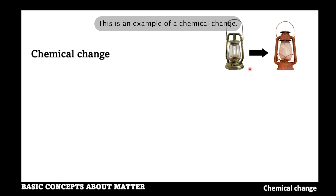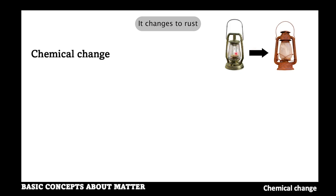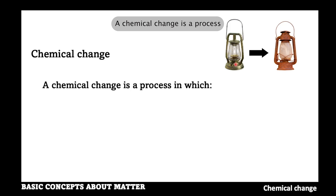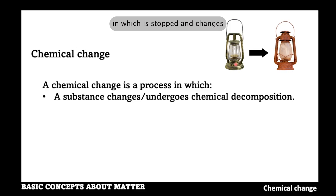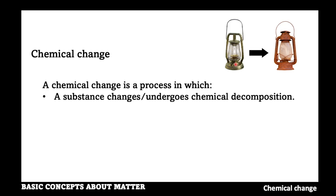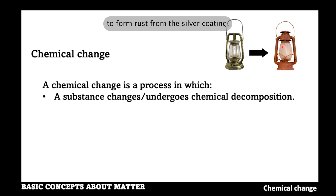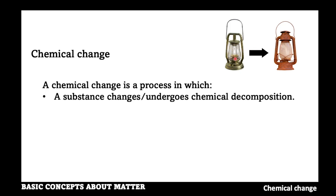Now let us look at chemical change. This lantern changes to rust when exposed to the atmosphere. A chemical change is a process in which a substance changes or undergoes chemical decomposition. For example, when this lantern is exposed to the atmosphere, the body of the lantern undergoes chemical decomposition to form rust from the silver coating.